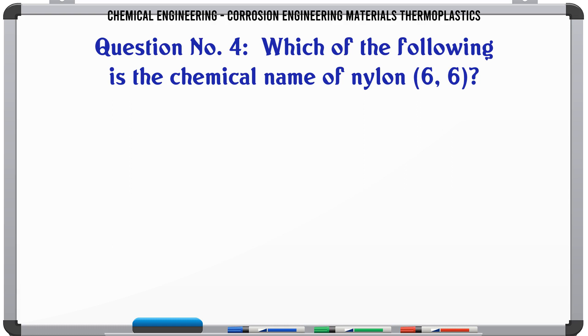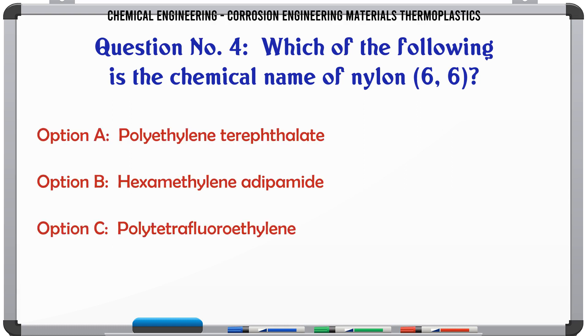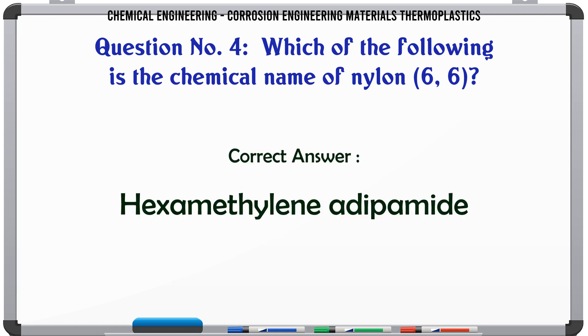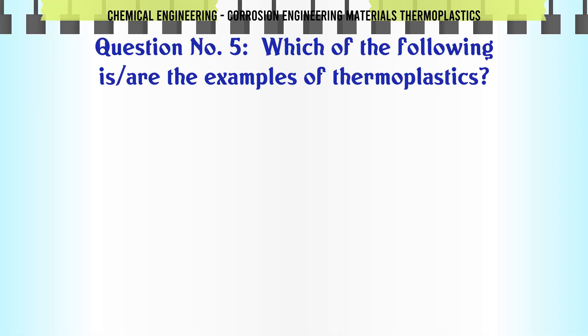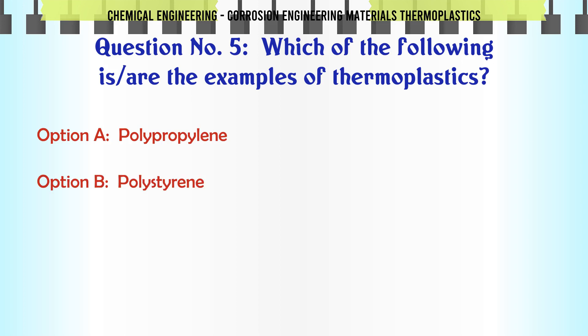Which of the following is the chemical name of Nylon-6-6? A. Polyethylene terephthalate, B. Hexamethyleneadiamine and adipamide, C. Polytetrafluoroethylene, D. Polyvinyl fluoride. The correct answer is hexamethyleneadipamide.